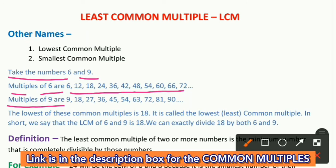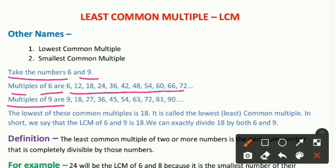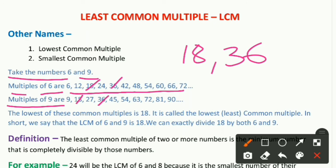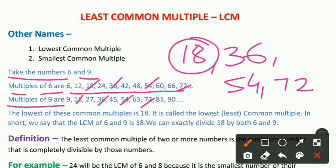If you don't know about common multiples, I have made a proper video on that — the link is in the description. Watch that first, then watch this video. Now we will find the common multiples of 6 and 9: 18, 36, 54, 72, and so on. Among these, 18 is the lowest, smallest, or least common multiple. So the LCM of 6 and 9 is 18.